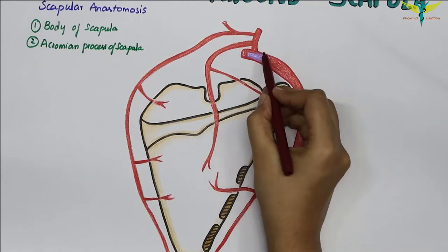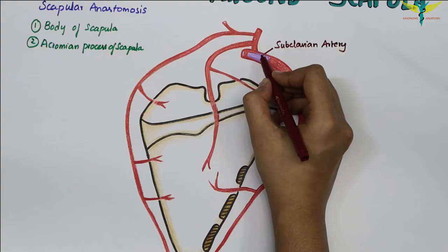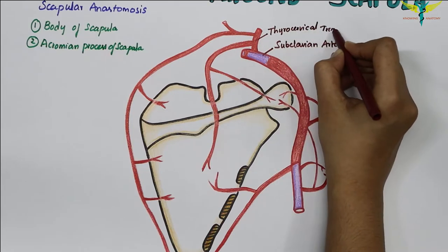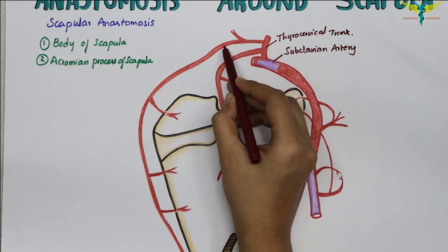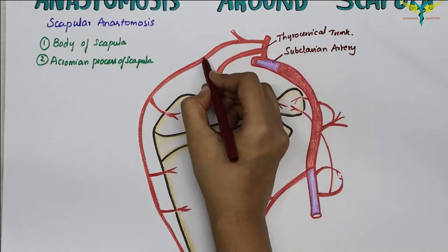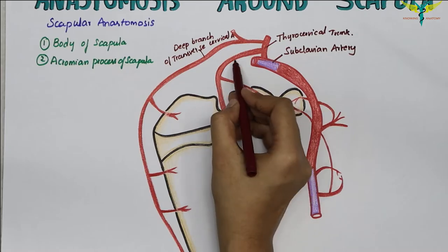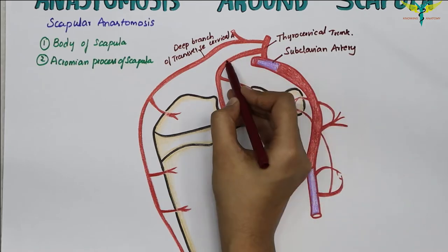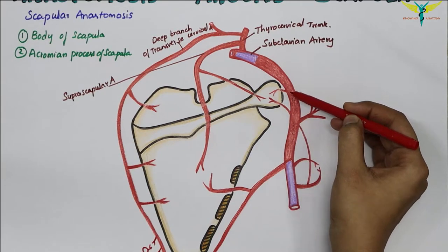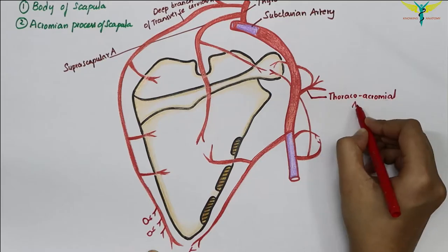To understand the anastomosis around the scapula, let's label the diagram. This is the subclavian artery — that is, the first part of the subclavian artery. This is the branch of it, which is the thyrocervical trunk. This artery is the deep branch of the transverse cervical artery, which is a branch of the thyrocervical trunk. This artery is the suprascapular artery, meaning it is above the scapula.